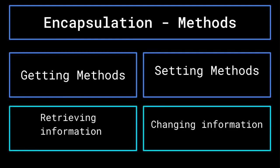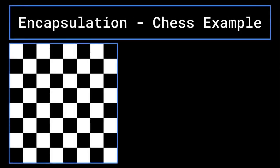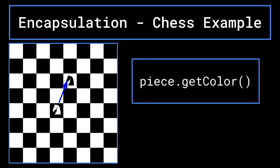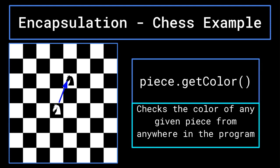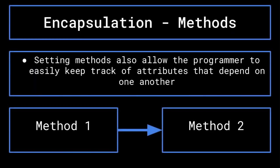In practice, one way this tends to work is by creating getter and setter methods. These methods act to either get information from an object or set attributes to different values. Think back to the chess example: if I was moving one piece and wanted to determine whether it was able to capture another piece, I would need to define a get color method associated with each piece that returns the piece's color — in this case, piece dot get color. This way, I could check the color of any piece from anywhere in my code without having to access the internal attributes of said pieces. This also makes it easiest to keep track of attributes that depend on one another.